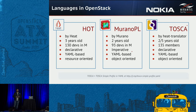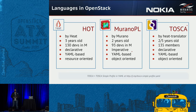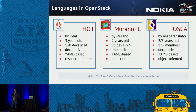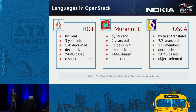An interesting point is how large the community around each language is. Given that HOT and MuranoPL are only available on OpenStack, there are 130 developers in Mitaka for Heat Templates and HOT, and 93 developers in Mitaka for MuranoPL. For Tosca, it is an open standard developed in OASIS, where any company can join the working group. They have 135 members working on developing and extending this language.